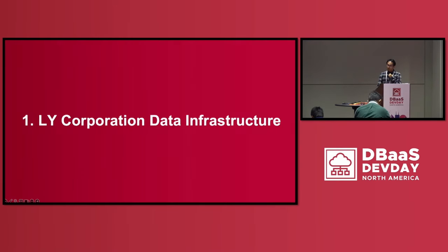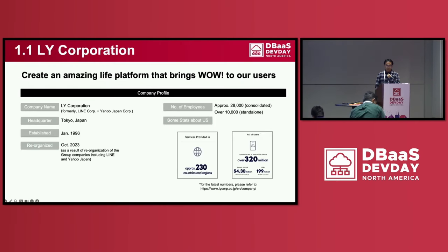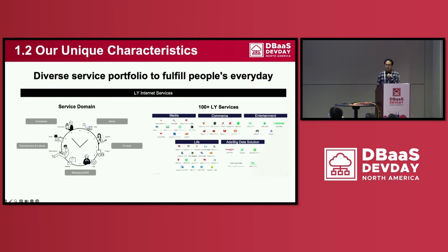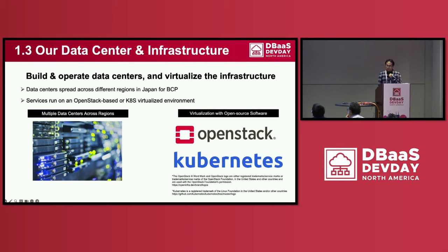LY Corporation has a vision to create an amazing life platform for our users, and the company has more than 28,000 employees in total. One unique characteristic of the company is that it has a diverse service portfolio to fulfill people's everyday needs. We deliver more than 100 services ranging from media to commerce, entertainment, lifestyle, and online services. To deliver these services, we build and operate our own data centers, located across multiple regions in Japan, to ensure they keep running even in the case of natural disaster or power outage.